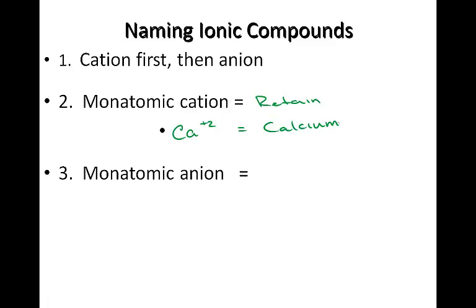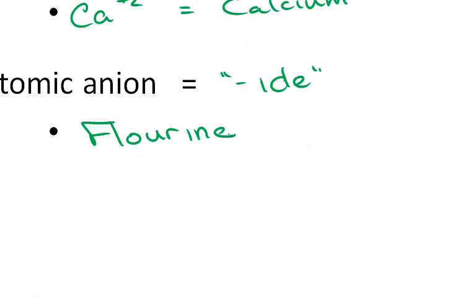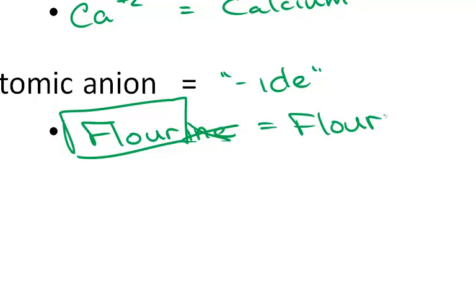Monatomic anions use the suffix 'ide'. For fluorine, we keep the root 'fluor' and add 'ide', making it fluoride.